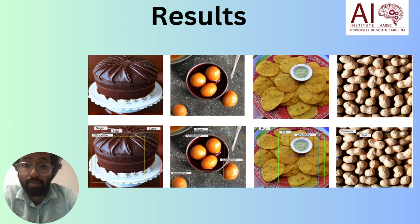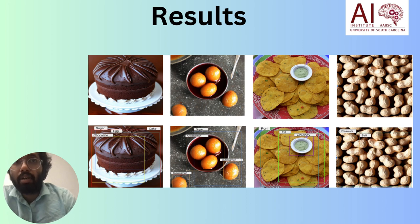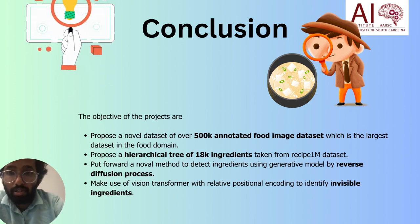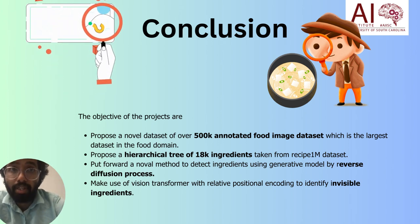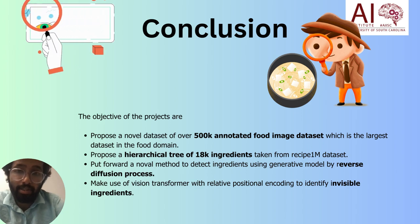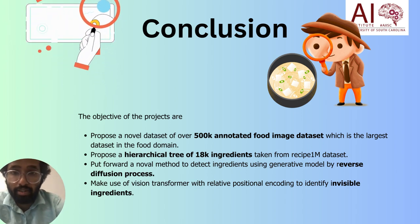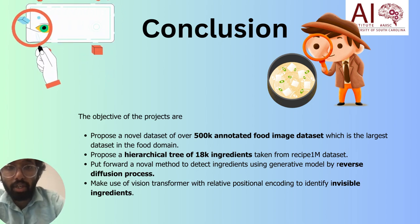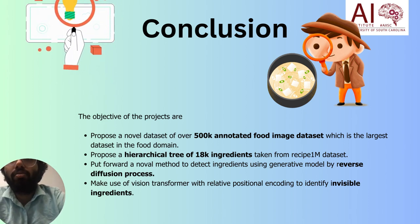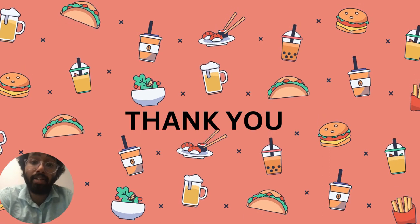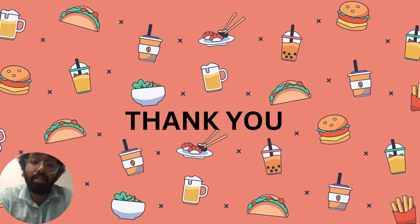Here are some results from the project, which classified visible ingredients, invisible ingredients, deformed ingredients, etc. In conclusion, my contributions include: creating a large-scale diverse dataset of more than 500k images and around 18k unique ingredients; creating a hierarchical tree of more than 18k unique ingredients; detecting invisible ingredients using vision transformers and relative positional encoding; and using stable diffusion for a zero-shot diffusion object detection model. Thank you and I hope you have a nice day.